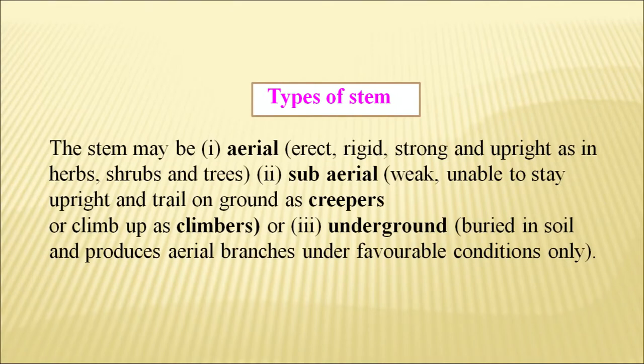Types of stems: the stem can be aerial — erect, rigid, strong and upright, for example in trees, herbs and shrubs. Sub-aerial stems are weak and grow parallel on the ground, for example money plant or grass which cannot stand erect. Some underground stems are buried in soil and produce aerial branches at various nodes during favorable conditions. When conditions are harsh, the stem goes underground to survive; when conditions are favorable, the nodes produce aerial branches.